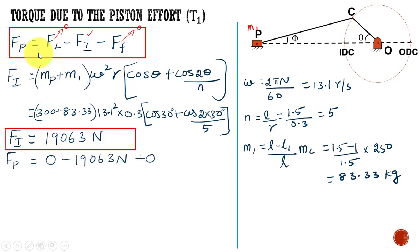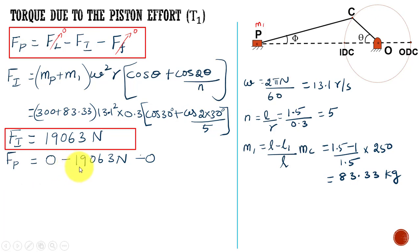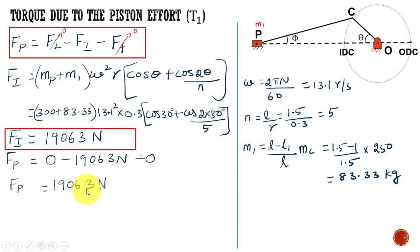Now we calculate the piston effort. Substituting FI = 19,063 N, with FL = 0 and FF = 0, the piston effort equals 19,063 Newton.